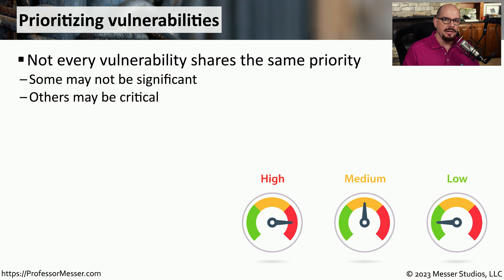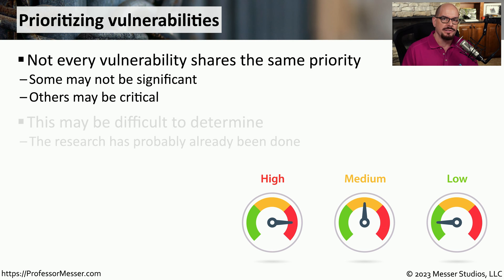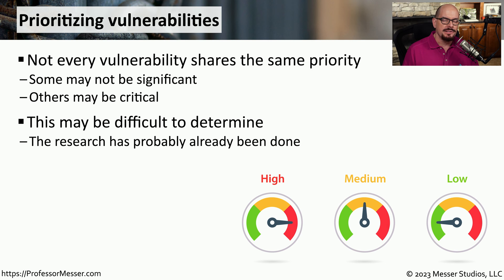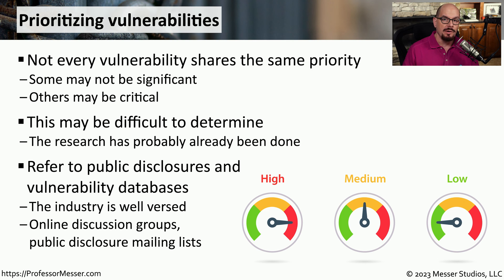This categorization of severity is an important one, because critical vulnerabilities will probably need to be addressed first, and low and informational vulnerabilities may be the last to address. Without any type of context, it may be difficult to take a single vulnerability and determine what priority needs to be set. Fortunately, there are a number of publicly available vulnerability lists that have already set these priorities, allowing you to take your list of vulnerabilities and put them in order from most critical to least critical.